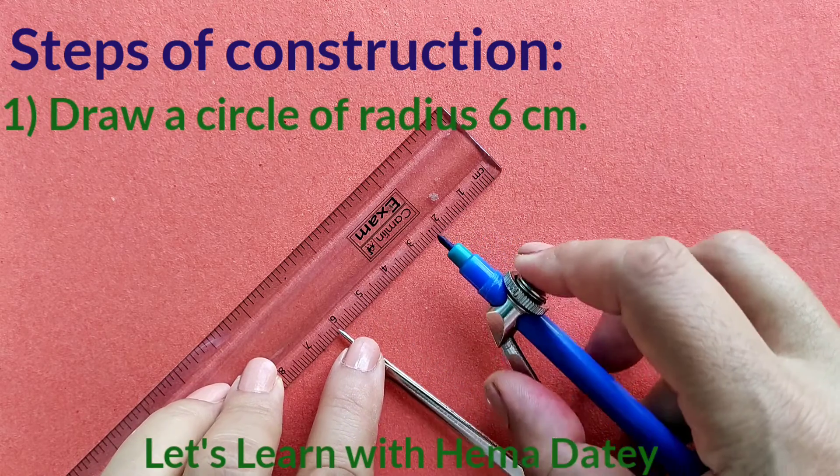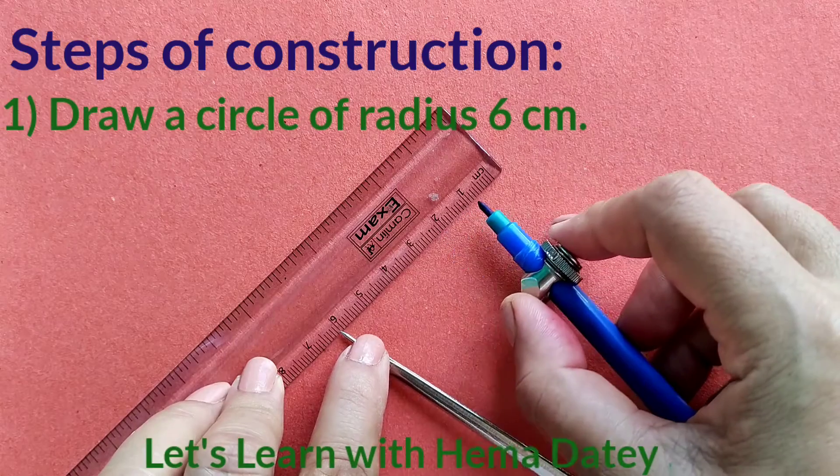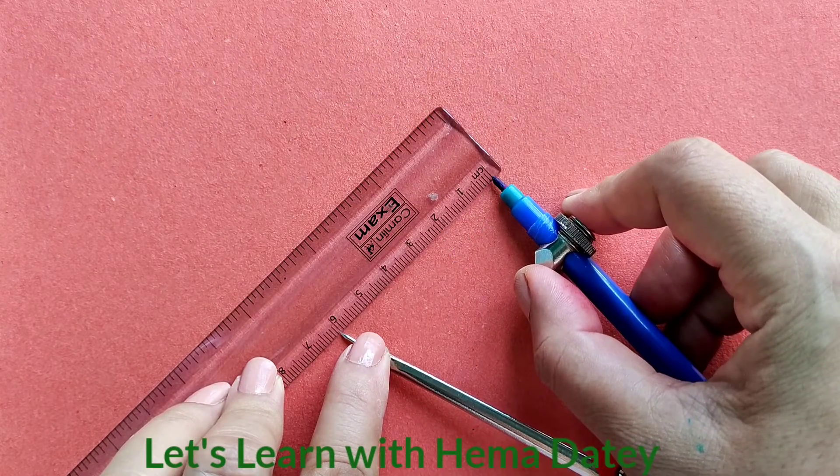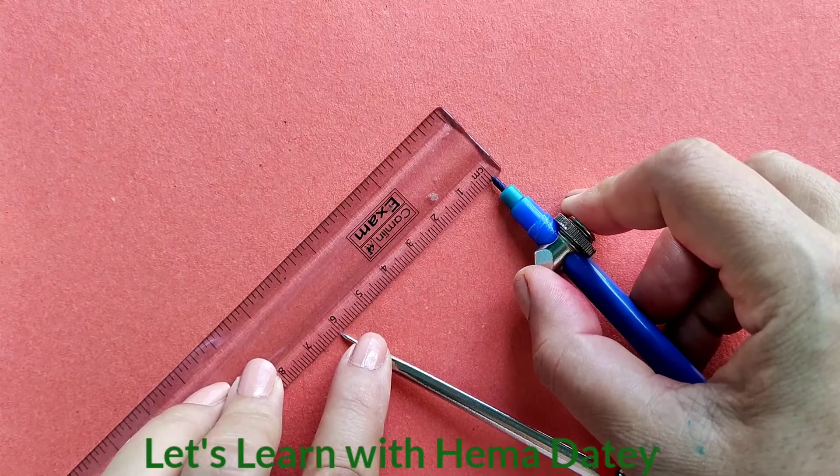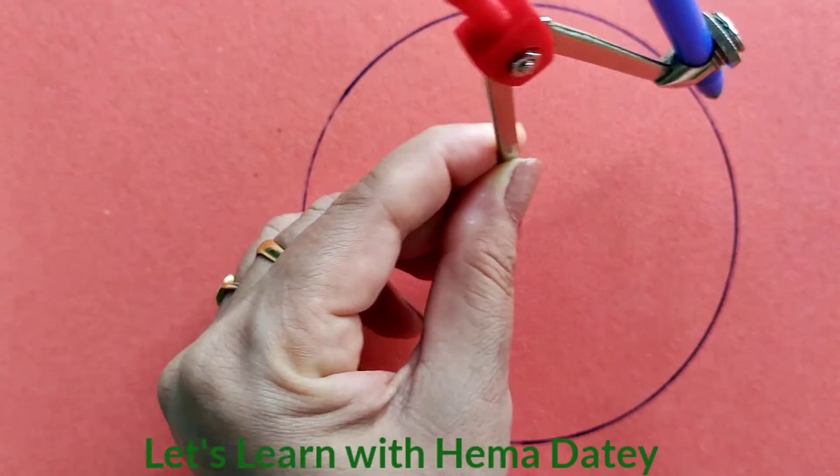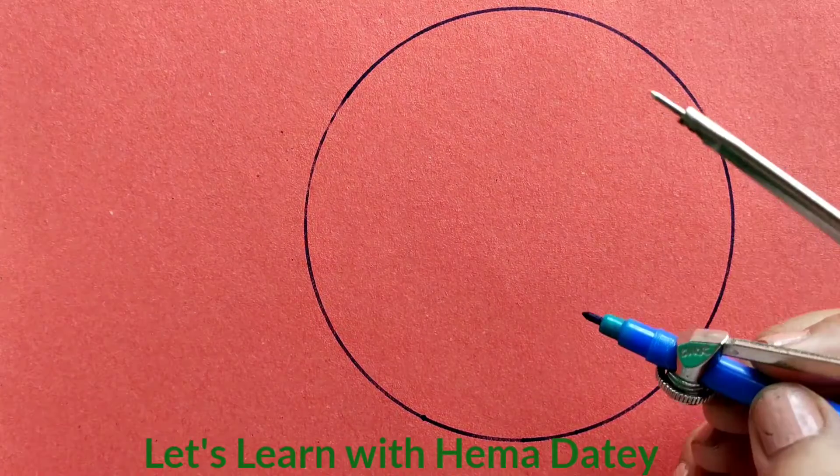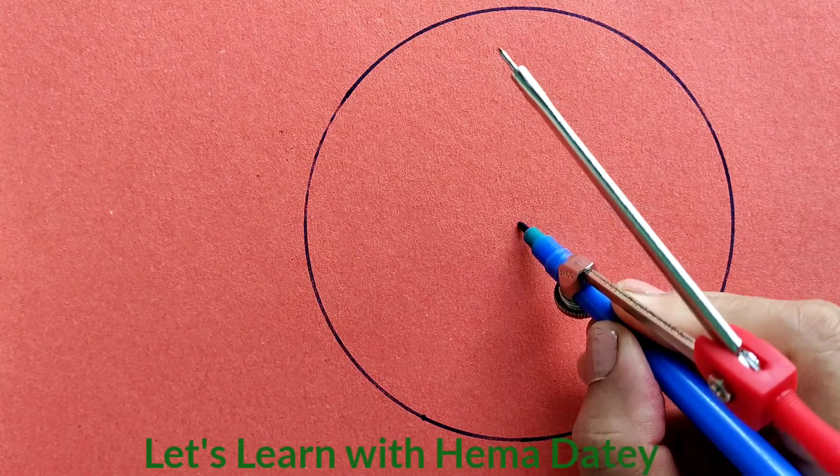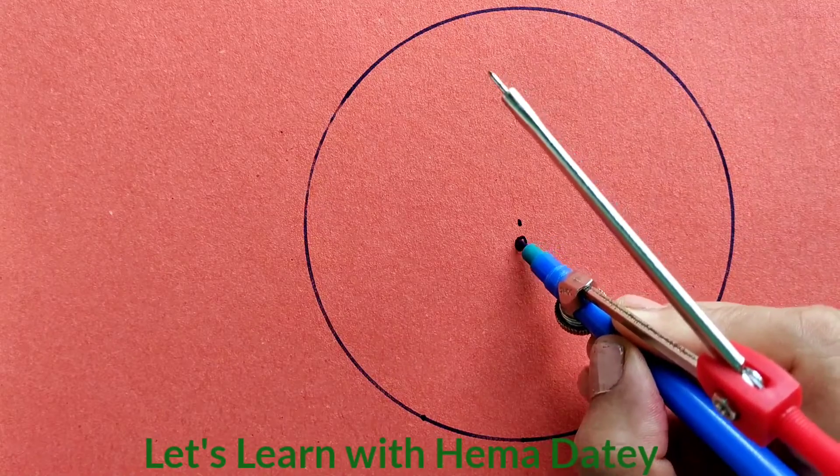first of all, we will draw a circle of radius 6 cm. Here I am taking 6 cm radius, let's draw the circle now. This is the circle of radius 6 cm and this is the center O.